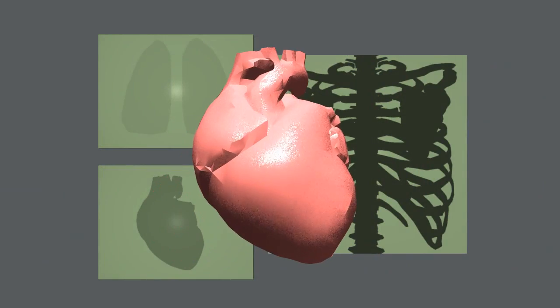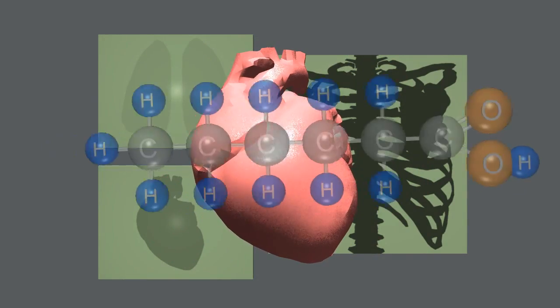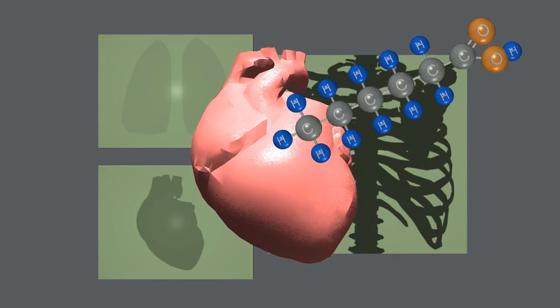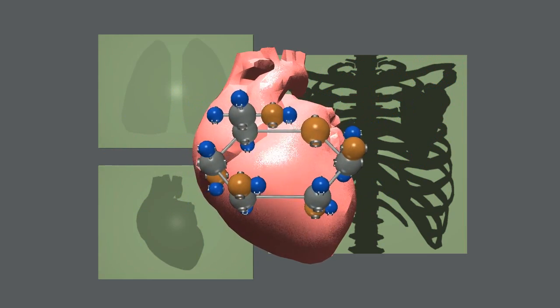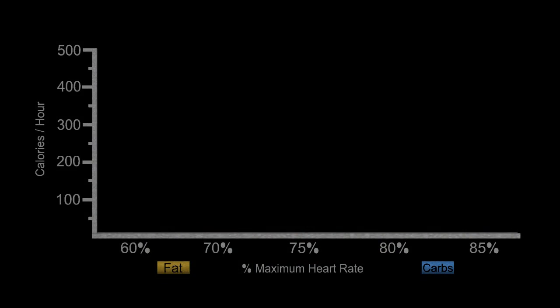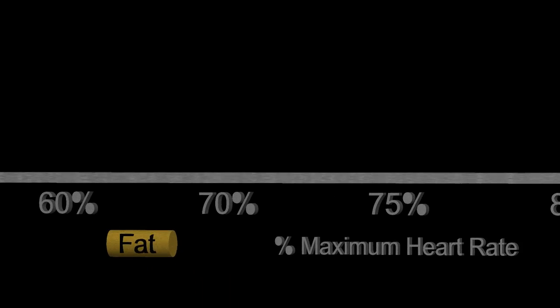So in times of high demand, the heart muscle and the skeletal muscle can actually convert from their preferred fatty acid metabolism to a glucose metabolism. And I'm going to demonstrate that with this graph right here. On the y-axis, we have calories per hour, how many calories per hour we're going to burn. On the x-axis, it's the percent of your maximum heart rate.